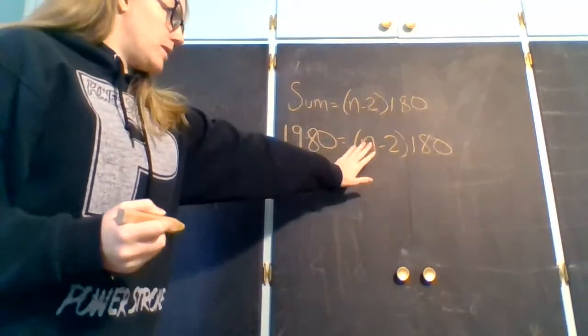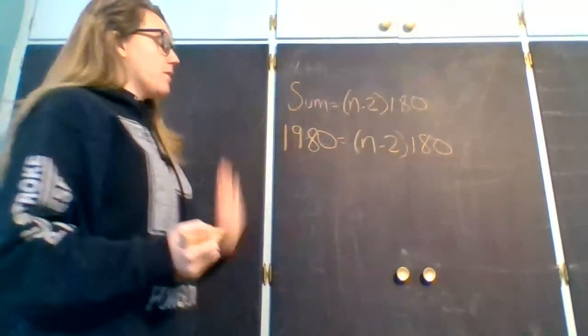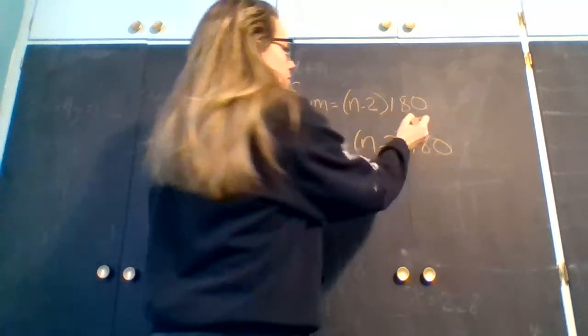Now, in order to get n by itself, which is what we're looking for, we need to first distribute.